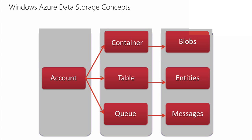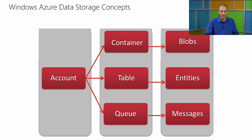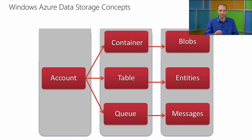The storage abstractions we expose are blobs, tables, and queues. Blobs are stored in what we call a container. Entities for tables are stored within a table. Queues store messages as well. All of those are wrapped up in what we call a storage account.